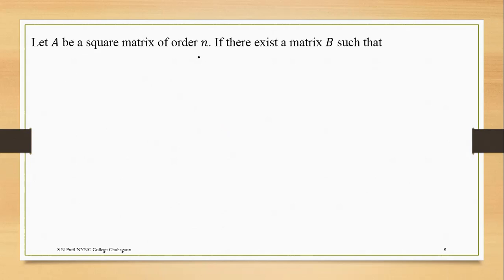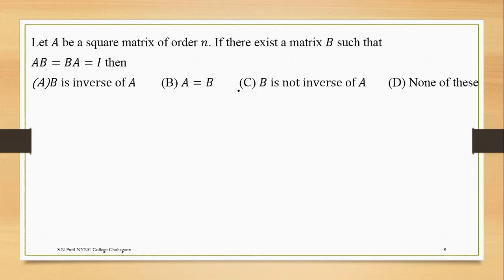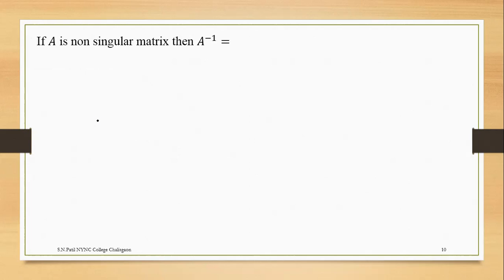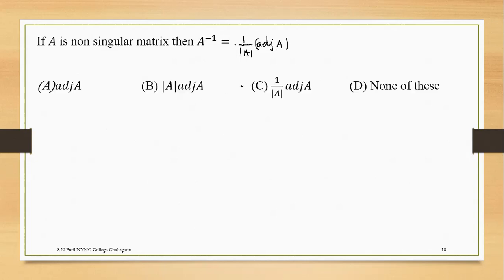Let A be a square matrix of order n. If there exists a matrix B such that AB equals BA equals I, then B is the inverse of A. That is the correct option. If A is a non-singular matrix, then A inverse equals 1 upon determinant into adjoint of A. That is answer C.